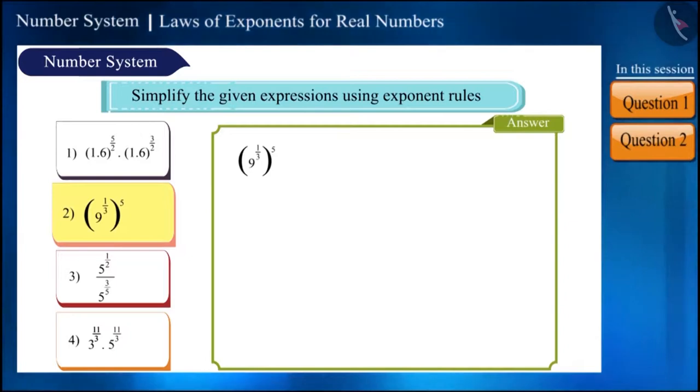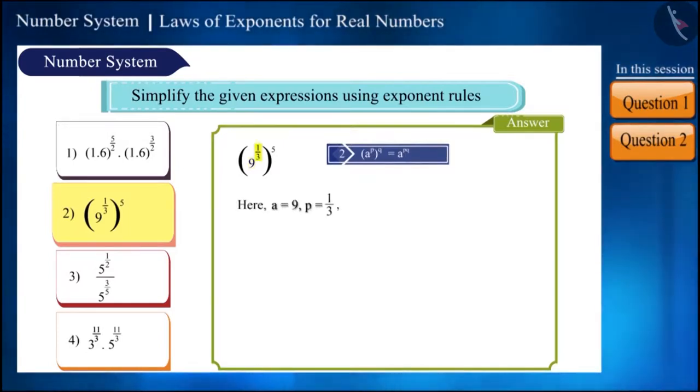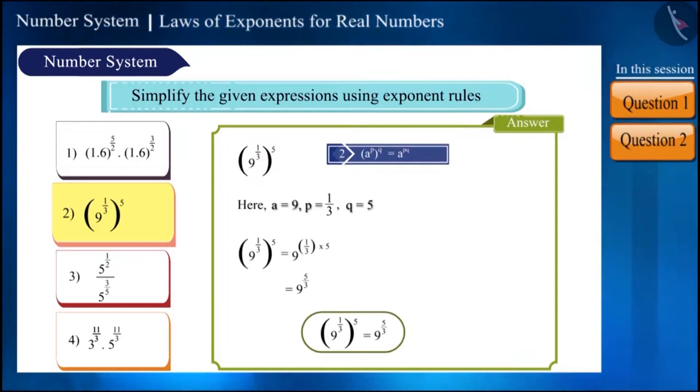The second number is quite easy to simplify. Here, we'll use this exponential rule. A equals 9, P equals 1/3, and Q equals 5. Now this will be 9 raised to the power of 5/3.